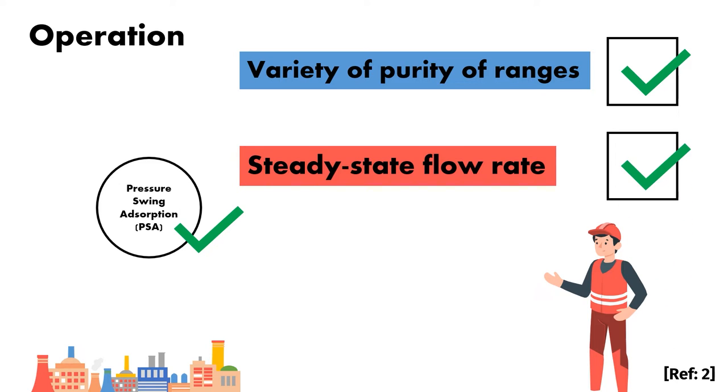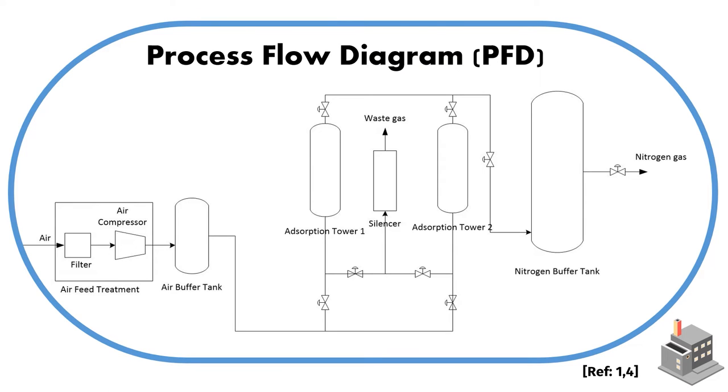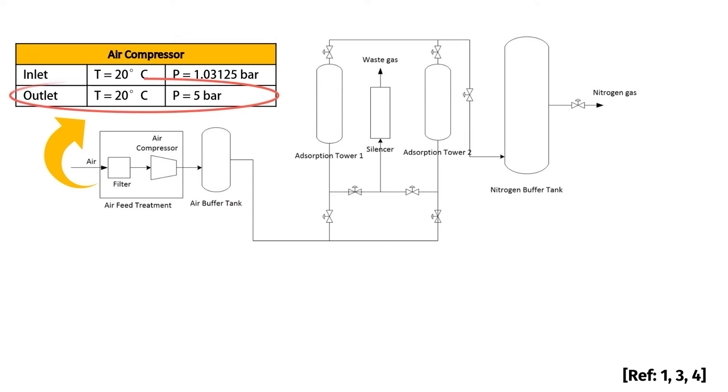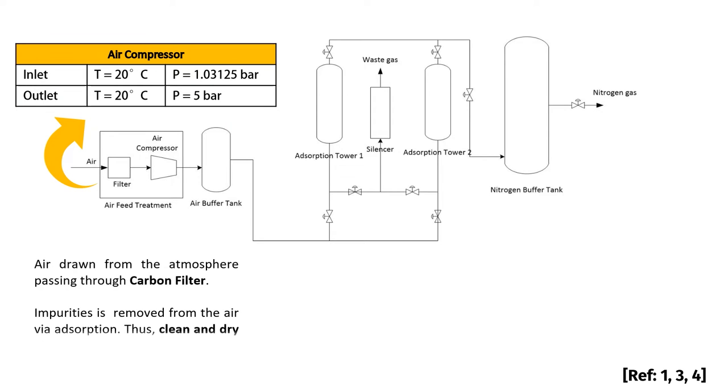This is the process flow diagram of Pressure Swing Adsorption. The temperature and pressure should be controlled at 20 degrees Celsius and 5 bars. The atmospheric air has impurities removed using a carbon filter before entering the adsorption unit to prevent the carbon molecular sieve from being damaged by moisture.